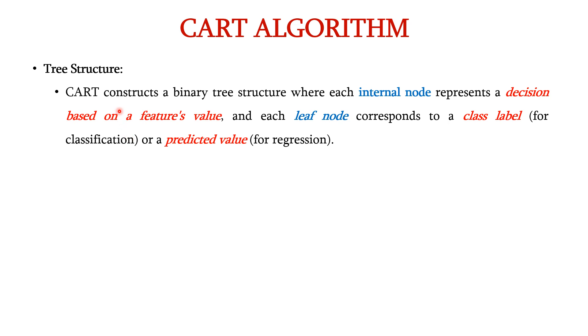CART will construct a binary tree structure where each internal node represents a decision based on the feature's value and each leaf node corresponds to a class label for classification or a predicted value for regression.